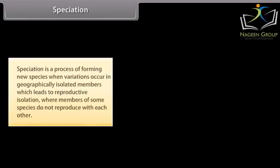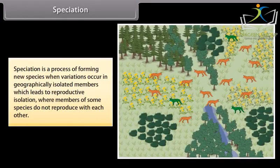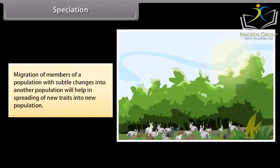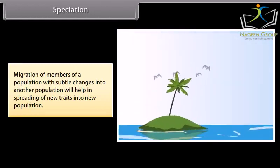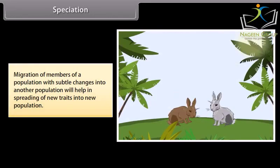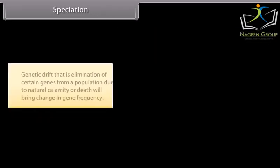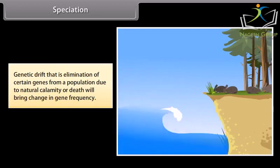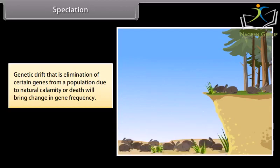Speciation is a process of forming new species when variations occur in geographically isolated members, which leads to reproductive isolation where members of some species do not reproduce with each other. Migration of members of a population with subtle changes into another population will help in spreading new traits into a new population. Genetic drift — the elimination of certain genes from a population due to natural calamity or death — will bring change in gene frequency.